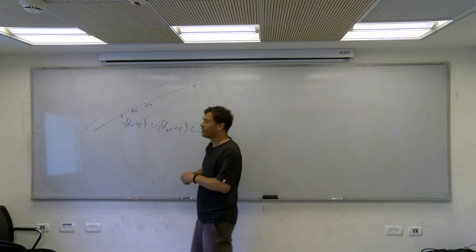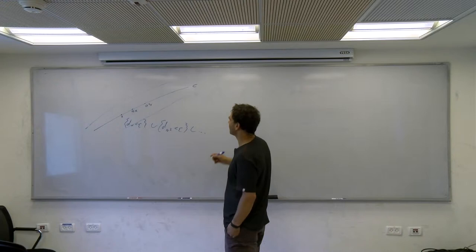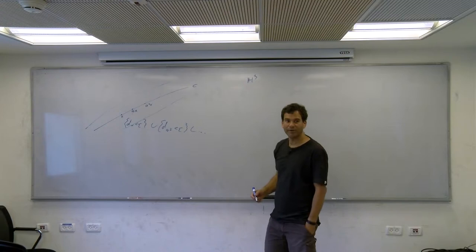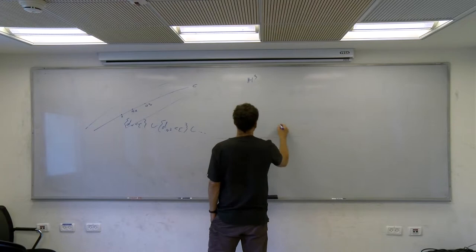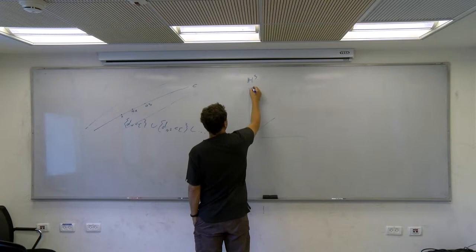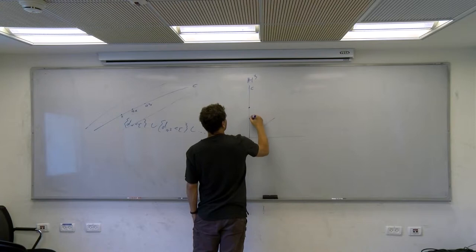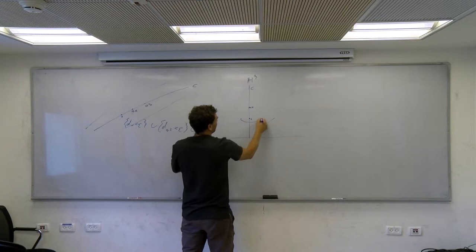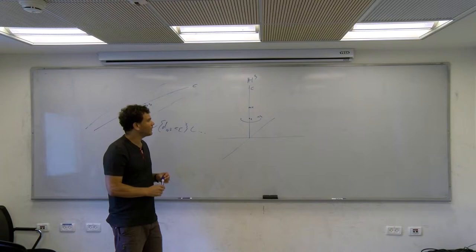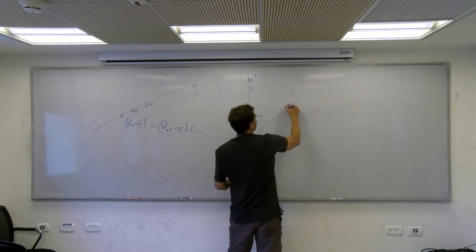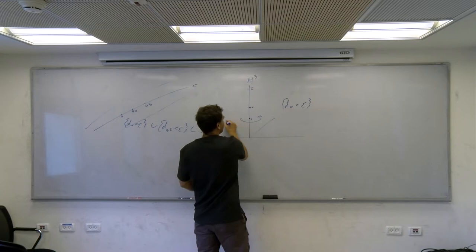This is a tube — a neighborhood of a geodesic. Think about the following picture: alpha has a bit more translation. Think of H3, imagine the upper half-space model, this is a geodesic C, and alpha takes x and translates it here, but also rotates around. So the neighborhood D_alpha less than epsilon — if you cut it in hyperbolic space...